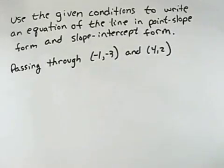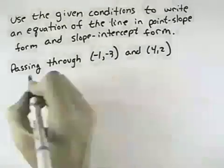Use the given conditions to write an equation of the line in point-slope form and slope-intercept form. Well, that means we need the slope between these two points.